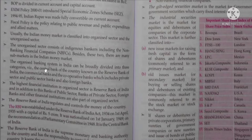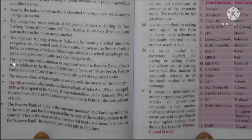The organized banking system in India can be broadly divided into three categories: first, the central bank of the country known as the Reserve Bank of India; second, commercial banks, including private sector, public sector and foreign banks. The highest financial institution in the organized sector is the Reserve Bank of India, and in addition, public sector banks, private sector banks, foreign banks and other financial institutions are also part of the organized sector.